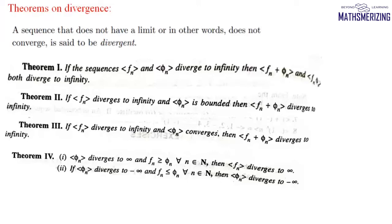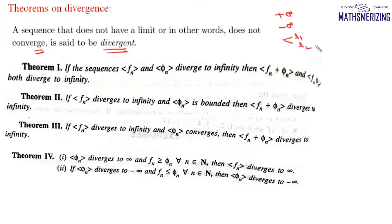A sequence may be a convergent sequence, and if a sequence does not converge then we say the sequence is a divergent sequence. Any sequence which does not have a limit or does not converge is said to be divergent. The conditions for a sequence to be divergent are: if it diverges to plus infinity or minus infinity, has more than one limit point, or has oscillating values, then the sequence is said to be a divergent sequence.